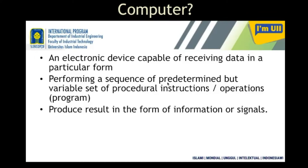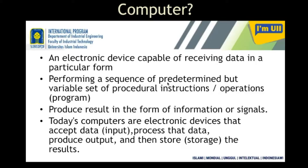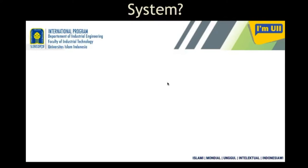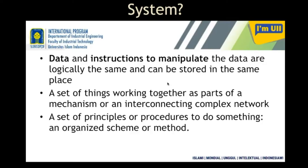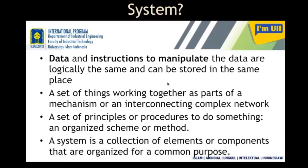After processing, the computer gives some information in the form of signals or information. So as a whole, a computer is an input device, a storing device, and it gives you output as a result. A set of things working together as part of a mechanism or an interconnecting complex network is called a system, or a computer system.